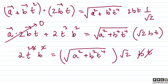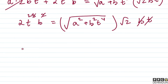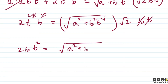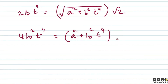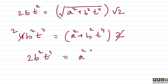तो हमारे पास आ गया: 2t cubed b squared equals √(a² + b²t⁴) multiplied by √2 into bt। एक b और एक t cancel out हो जाएगा, तो हमारे पास आ गया: 2bt squared equals √(a² + b²t⁴) multiplied by √2। अब दोनों तरफ square लेते हैं: 4b²t⁴ equals (a² + b²t⁴) multiplied by 2।